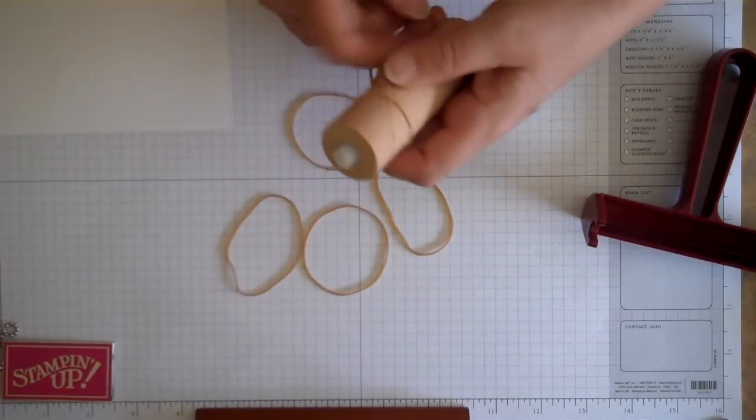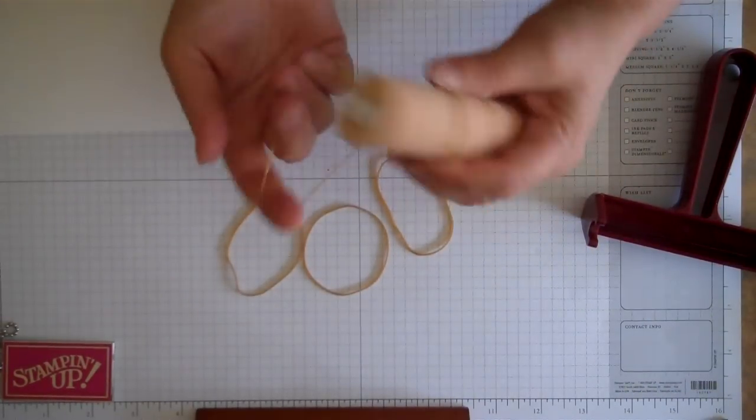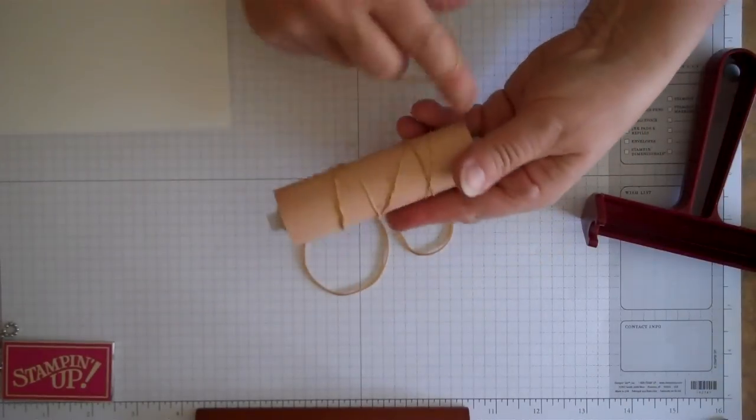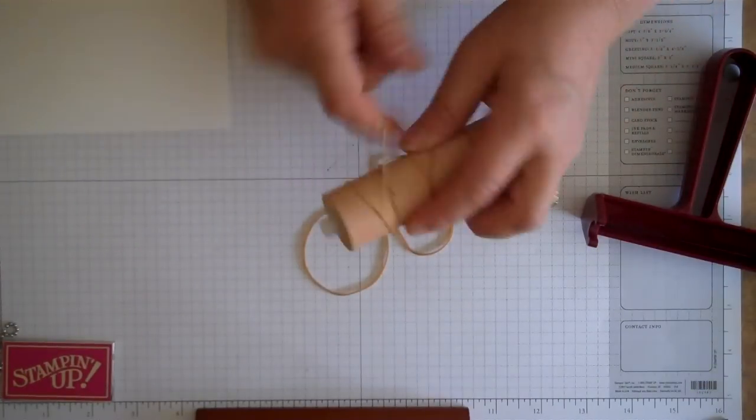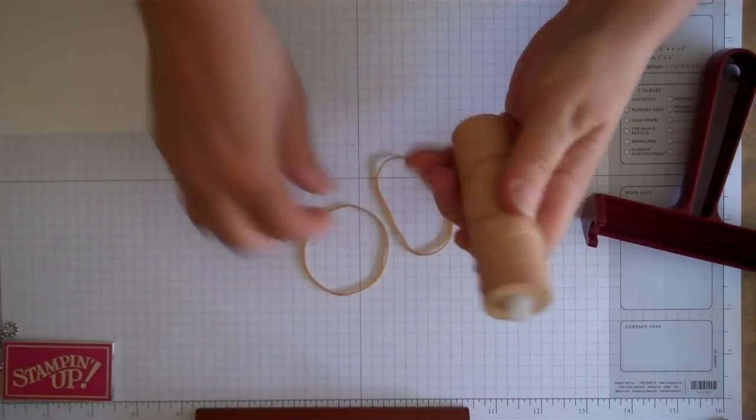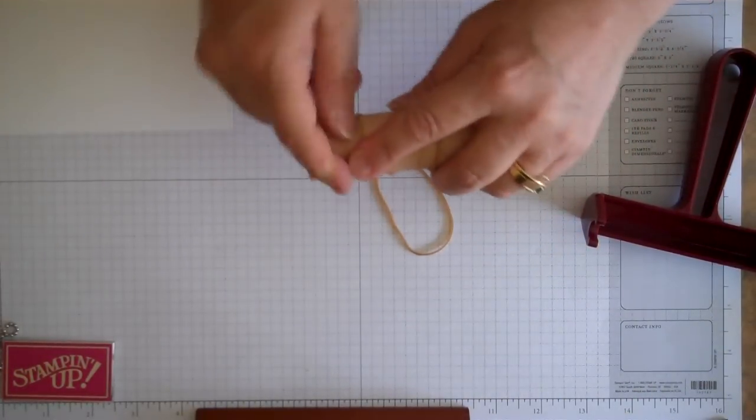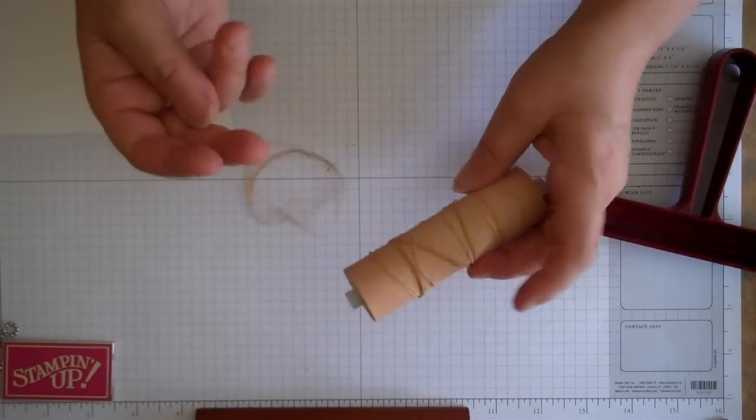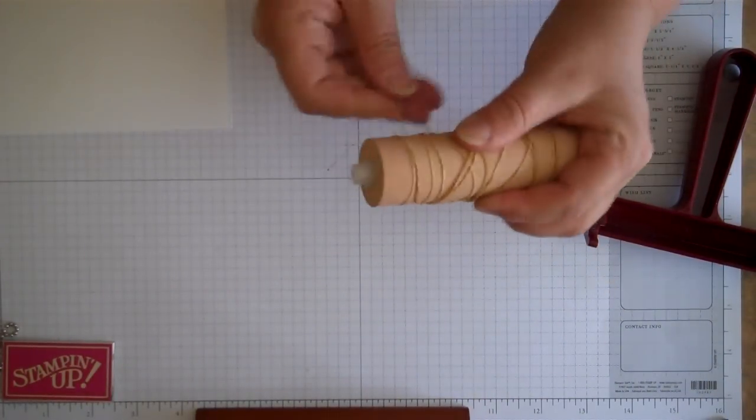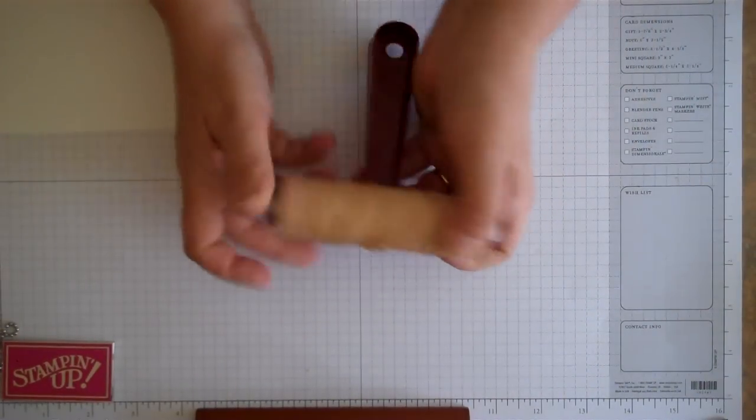You're just going to go ahead and put the rubber bands on the roller, and you're going to do this in various patterns. Don't try to put them all on top of one another, you're just going to spread them apart from each other. You're going to wrap these around until you get the look that you want. I've used five, you can use more or less, whatever you choose. Various thicknesses is fine, and you're going to put the roller back into the handle.